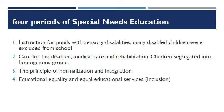To sum up, there are four periods of special needs education: first, instruction for pupils with sensory disabilities where many disabled children were excluded from school; second, care for the disabled through medical care and rehabilitation, where children were segregated into homogeneous groups; third, the principle of normalization and integration; and fourth, educational equality and equal educational services — or inclusion. We know that inclusive education is now widely accepted, but the history has been long and difficult, starting from when people were ridiculed and excluded, through to the time of awareness and advocacy by different contributors passionate about people with special needs.